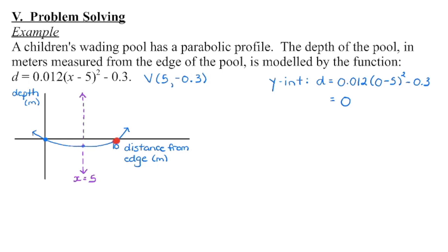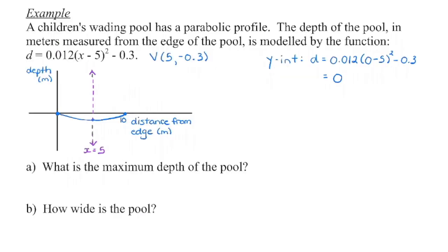Based on those three points, I can draw a rough sketch of the parabola. It's going to have to open up in order to pass through those points — and checking the function confirms a is positive, so it should be opening up. The parabolic profile is what you'd see if you cut the pool down the middle. With this context, the domain is going to go from 0 to 10, so we're only looking at that piece of the function.